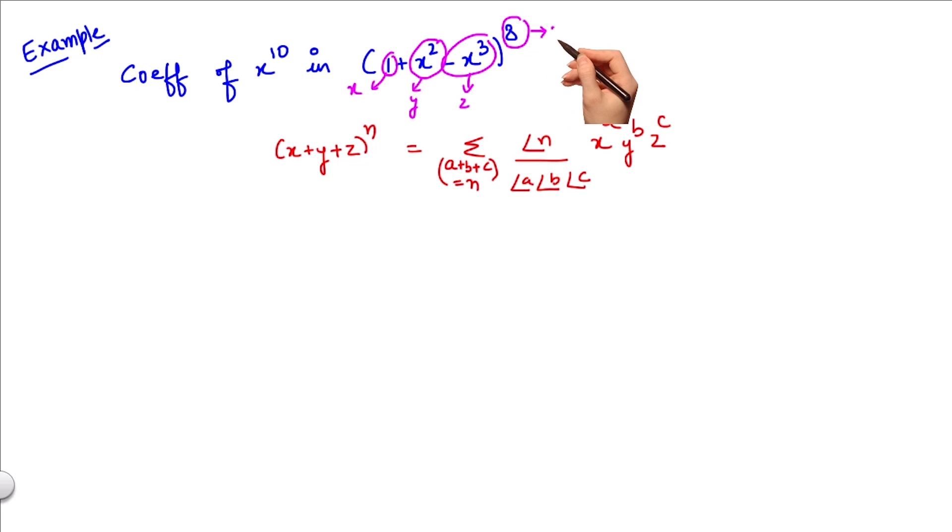Applying this formula, I get (1 + x² - x³)^8 equals the summation of 8!/(a!b!c!) × 1^a × (x²)^b × (-x³)^c, where a + b + c = 8.